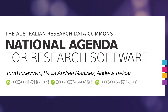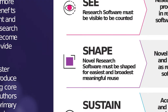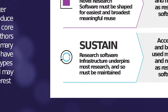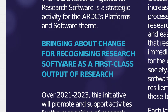The National Agenda for Research Software is a set of actions to see, shape and sustain research software. We see these as the three core components that will lead to recognition of research software as a first class output of research.